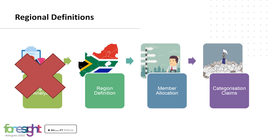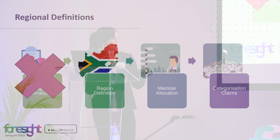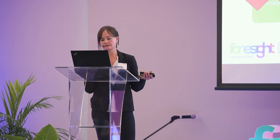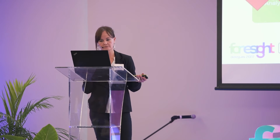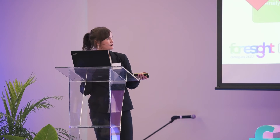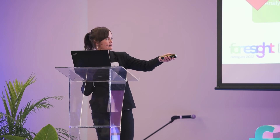In total we have 23 tertiary regions, 66 secondary regions and 135 primary regions. Now that we've completed the regional definition part of the process, we move on to the next section of the presentation which speaks to member allocation.